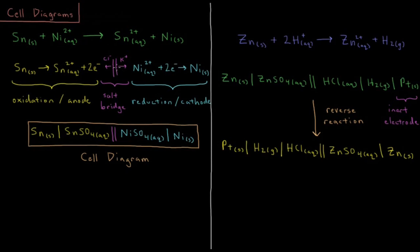This is balanced out by potassium ions, cations flowing to the cathode, and chloride anions flowing to the anode.